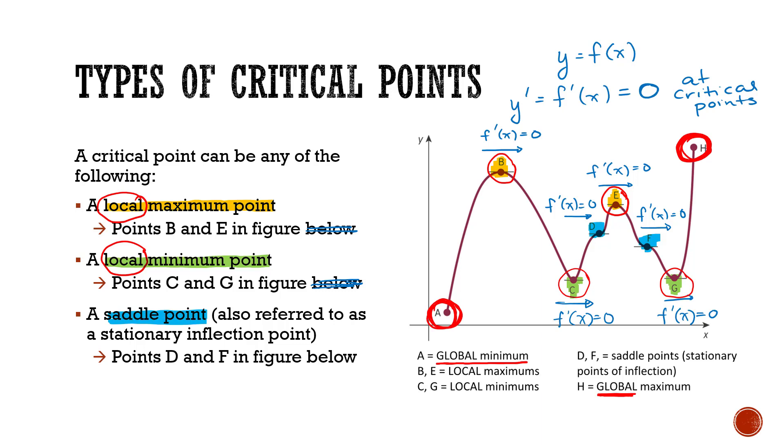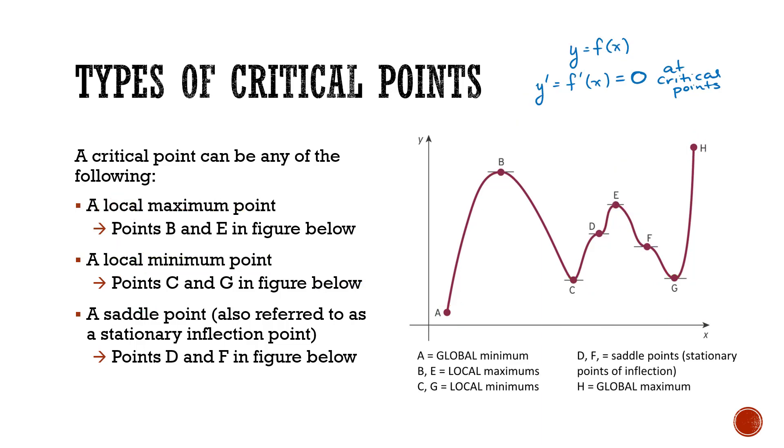So another point of terminology, global versus local. So there we have it, the definition of what a critical point is. It's where the slope or first derivative is equal to zero. And we have to be mindful because when we determine where the slope, where that first derivative is equal to zero, it could mean that it's a local maximum.